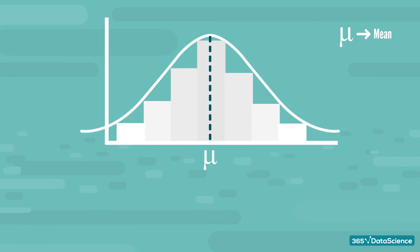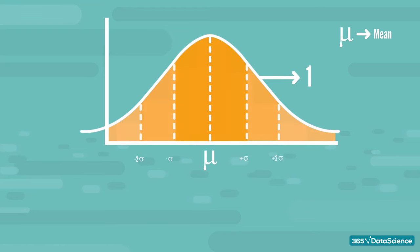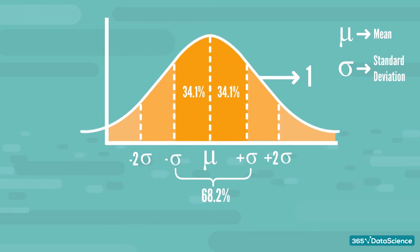Moreover, the area under the curve, which is this area here, is equal to 1. The first key observation is that approximately two-thirds of the collected means are one standard deviation away from the mean of sample means. And approximately all of the data lies within two standard deviations away from it.